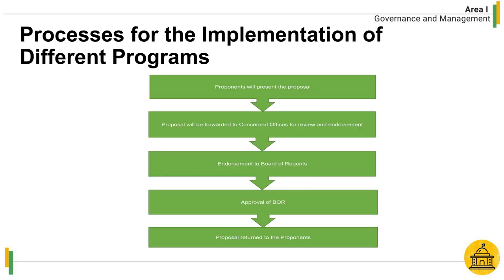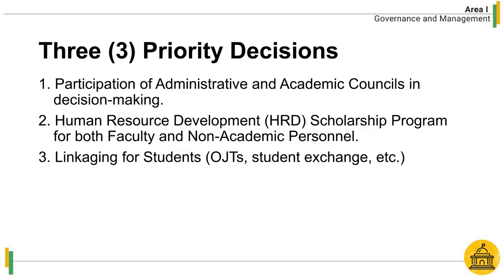There are also processes for the implementation of different programs. Three priority decisions have been implemented through the organizational structure. First, participation of admin and academic councils in decision-making. Second, human resource development scholarship program for both faculty and non-academic personnel. And third, linkaging for students.